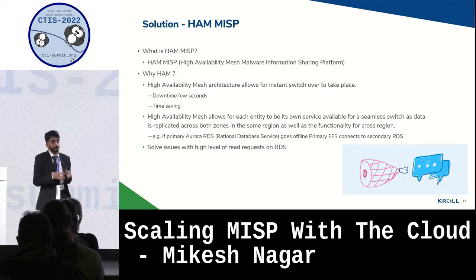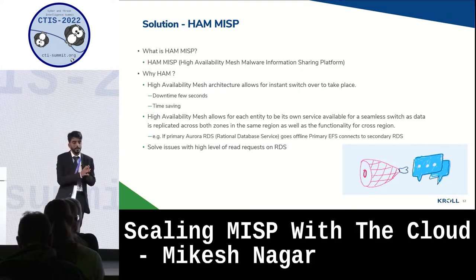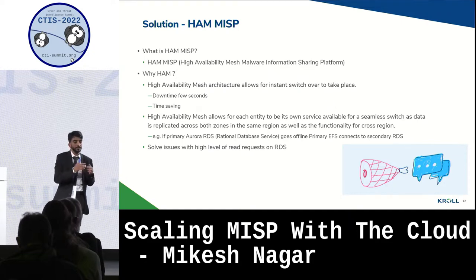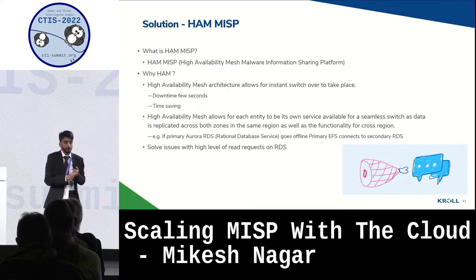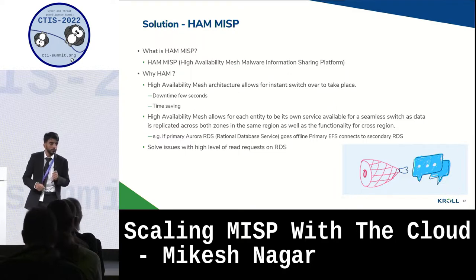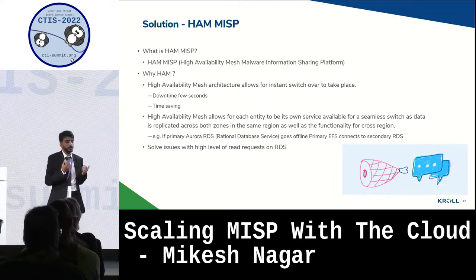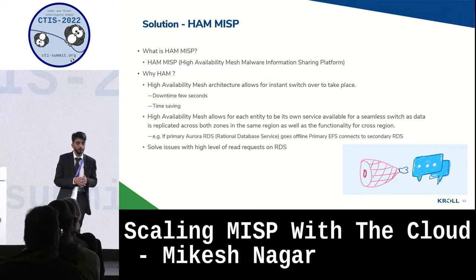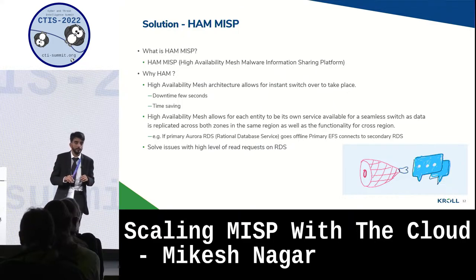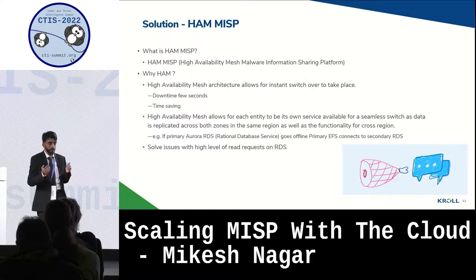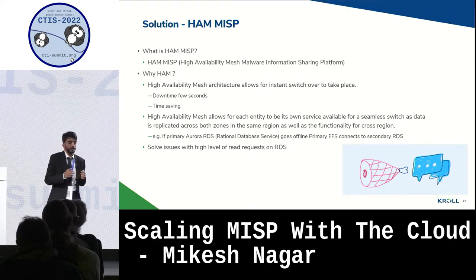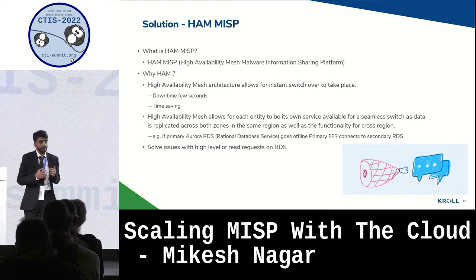What we've done with the High Availability Mesh implementation is separated each core element of MISP into separate sections, as well as made sure they were replicated across different availability zones and regions. For example, if the RDS — the Relational Database Service, in our instance the primary Aurora RDS — goes offline, the primary EFS is automatically able to sync up and go to the secondary RDS without any interference. This solves the issue of high availability in a production environment, as well as the problem we were facing with expensive read requests on the RDS.